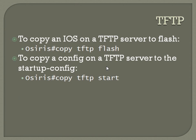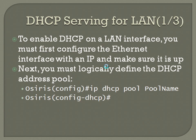DHCP serving for the LAN. To enable DHCP on a LAN interface you must first configure the Ethernet interface with an IP and make sure it is up. So once you've got a LAN interface, you've got an IP on it, it's up.